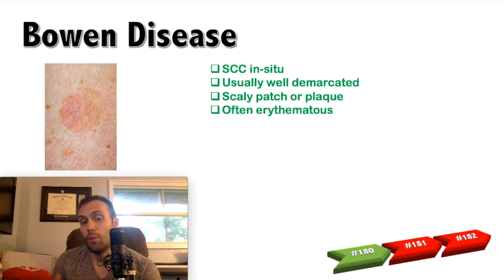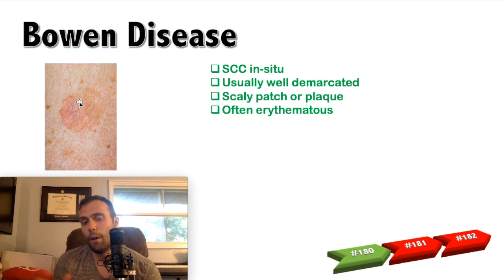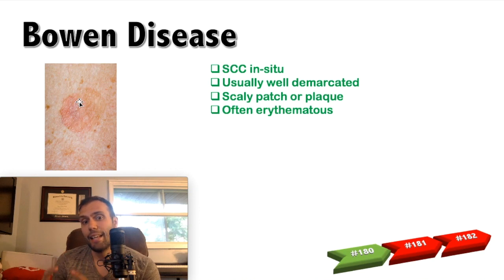Bowen's disease is a squamous cell carcinoma in situ — we have not yet invaded the dermis on biopsy. This is usually a very well-demarcated lesion and typically very erythematous. There's a whole variant of these related to genital lesions. When thinking about Bowen's disease, remember it's an in situ squamous cell carcinoma — it has not yet invaded the dermis, so it's in the very early stages.